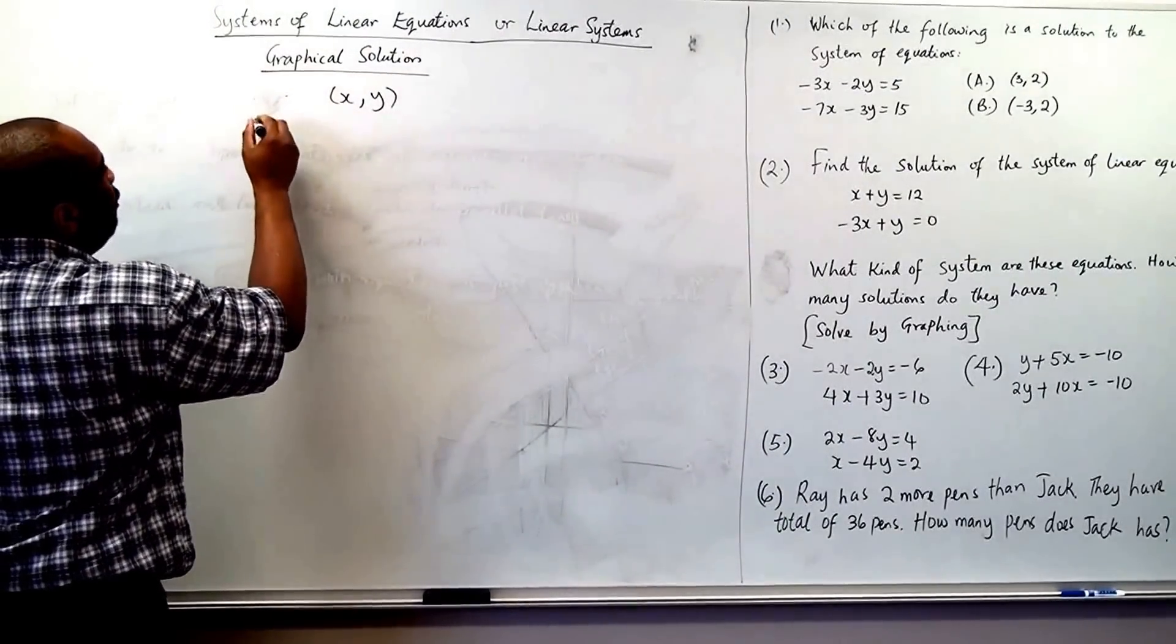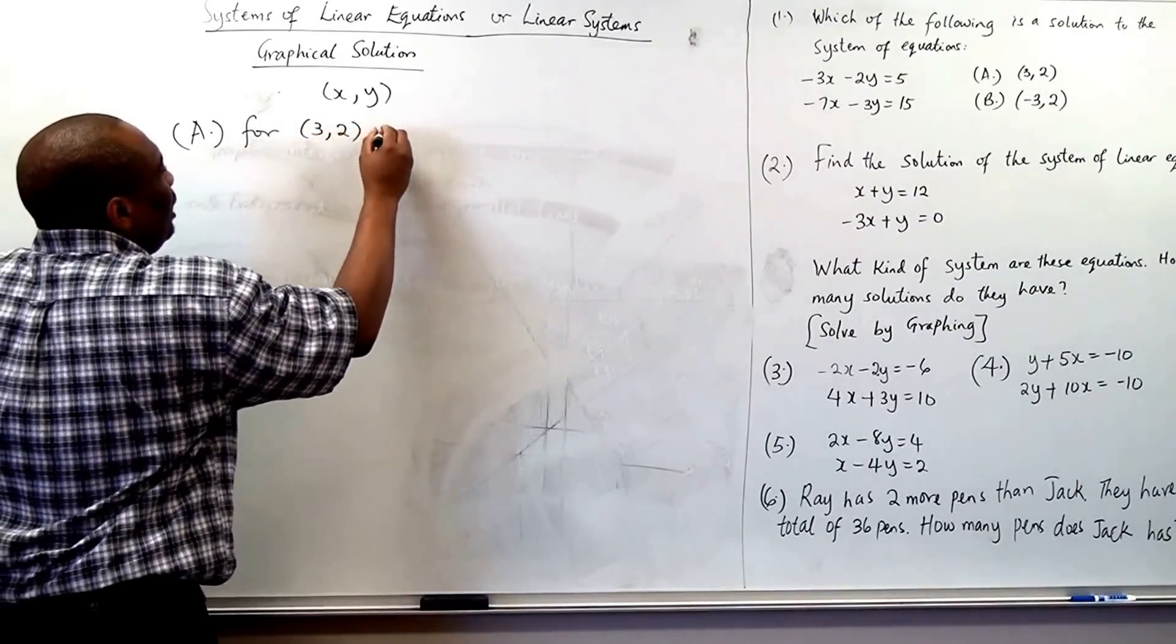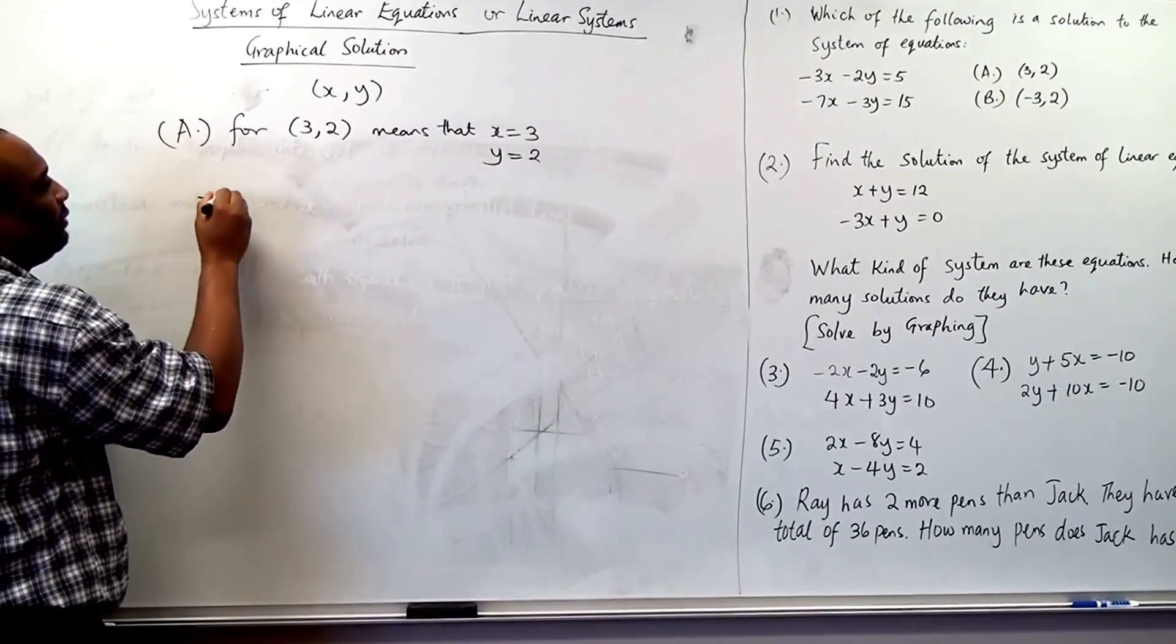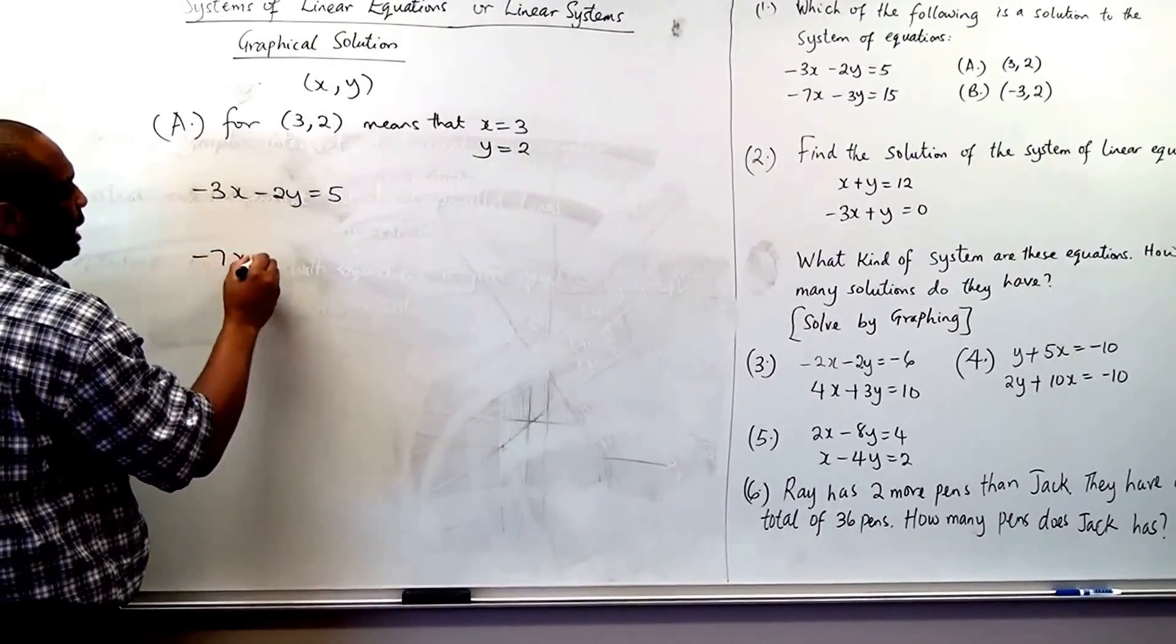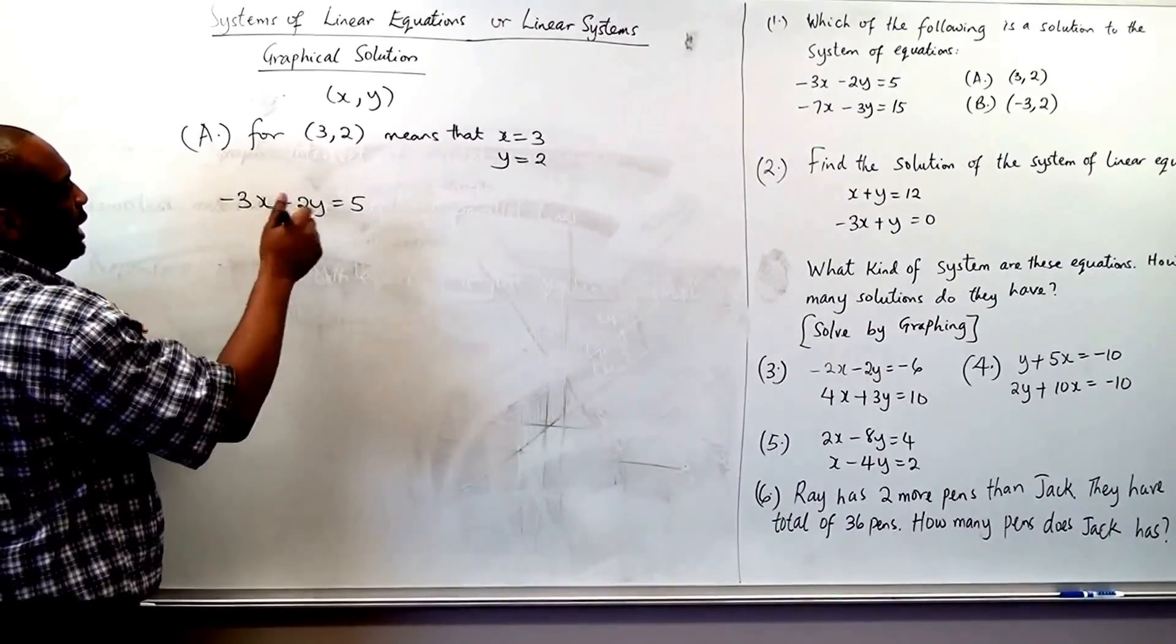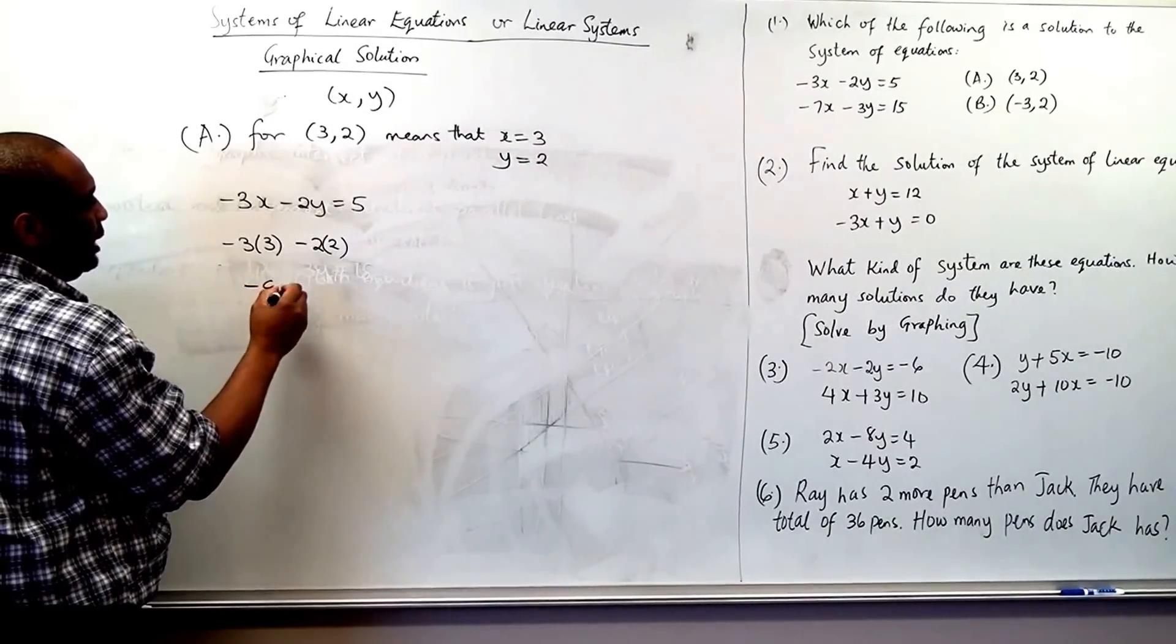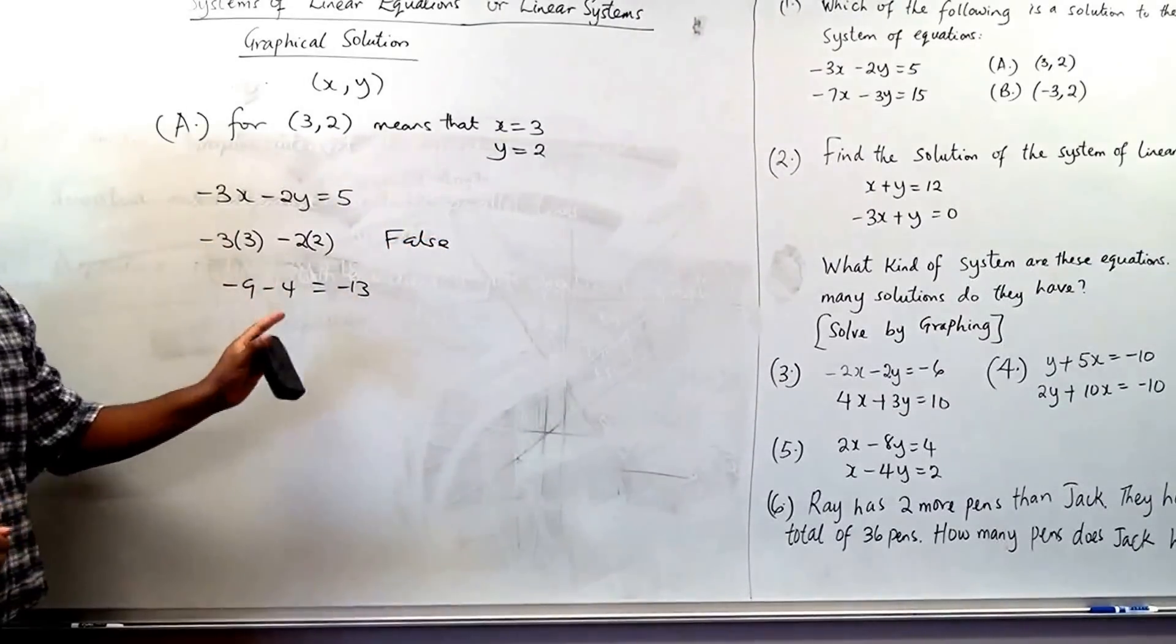For A, let's do A, 3 and 2. It means that x is 3 and then y is 2. So we plug it in, negative 3x minus 2y to be 5 and negative 7x minus 3y to be 15. Well, let's start with the first one. So if we plug it in here, this is negative 3 times 3 minus 2 times 2. So this will give us negative 9 minus 4 and that is negative 13. So this is false.